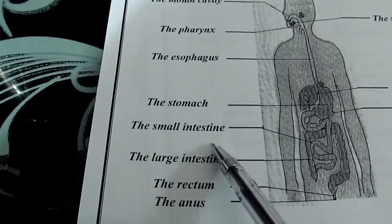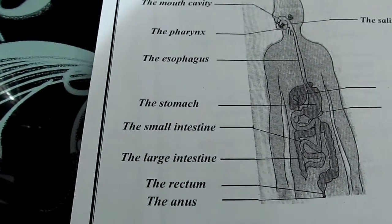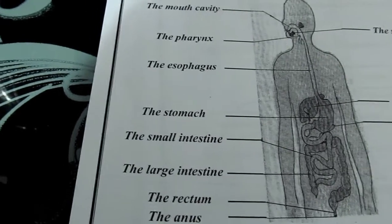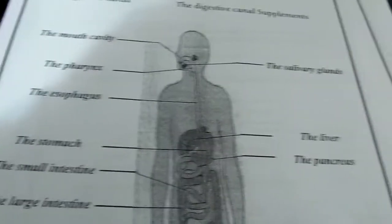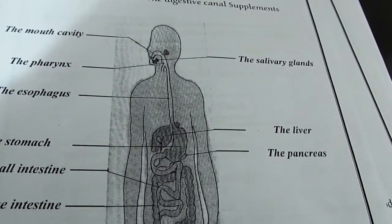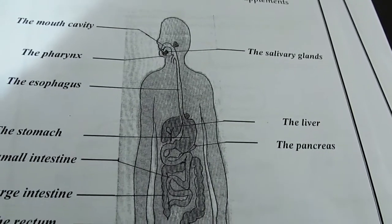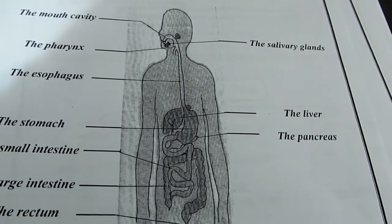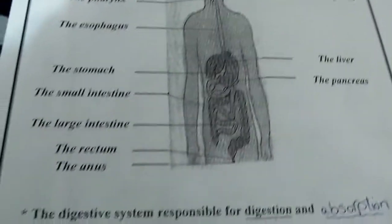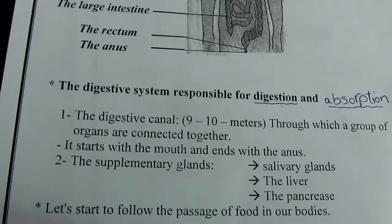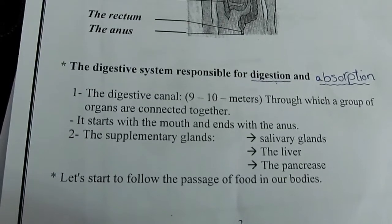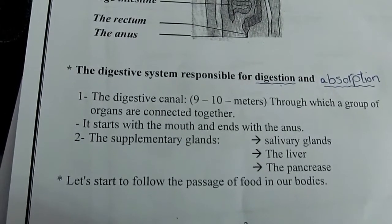The digestive canal supplements include the salivary glands, the liver, and the pancreas. Now let's learn about the components of the digestive system in more detail.